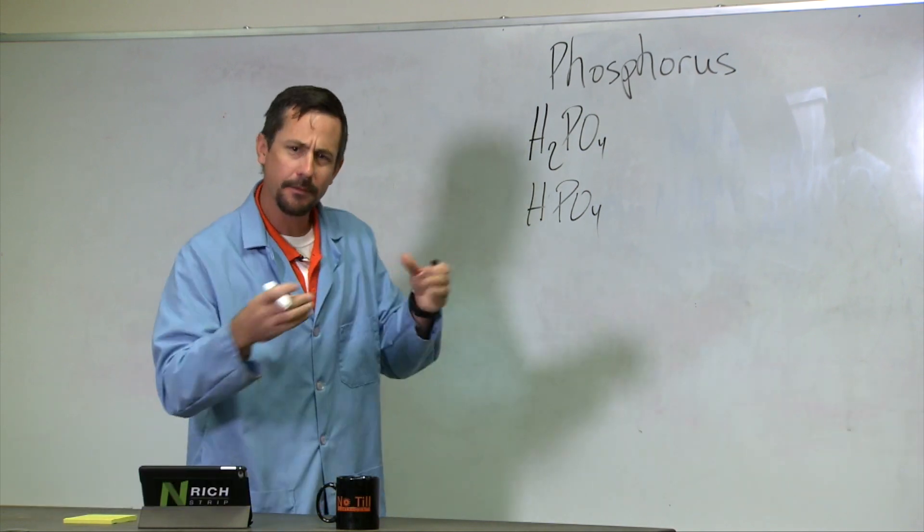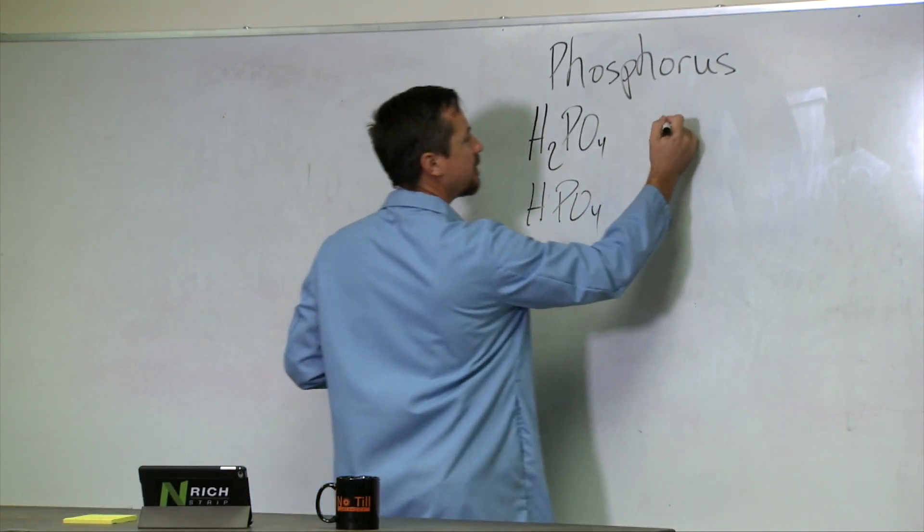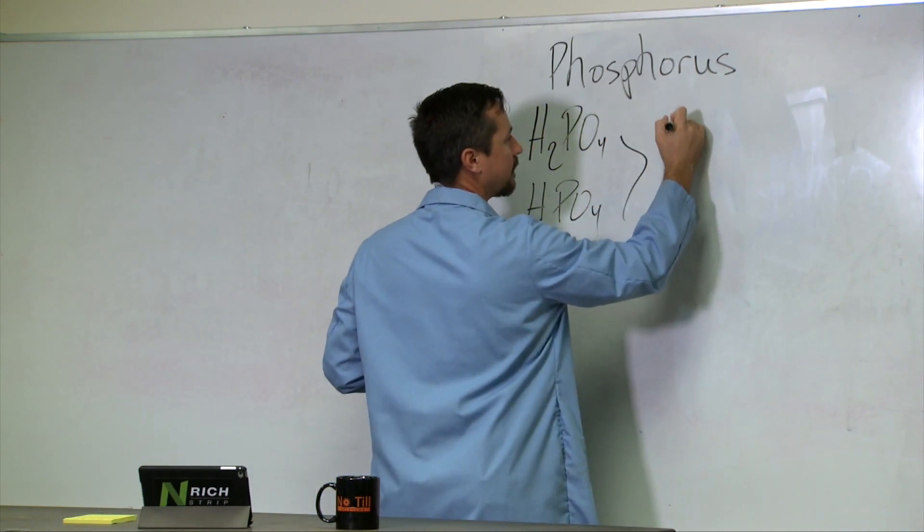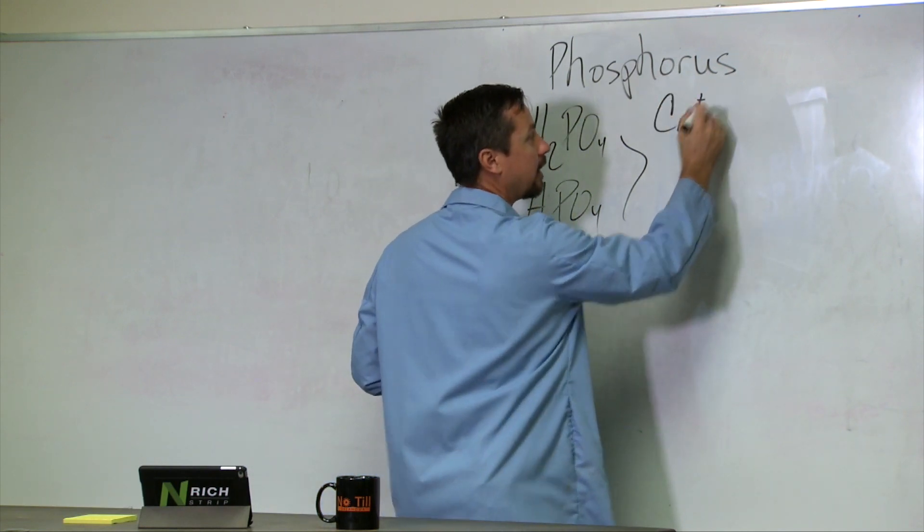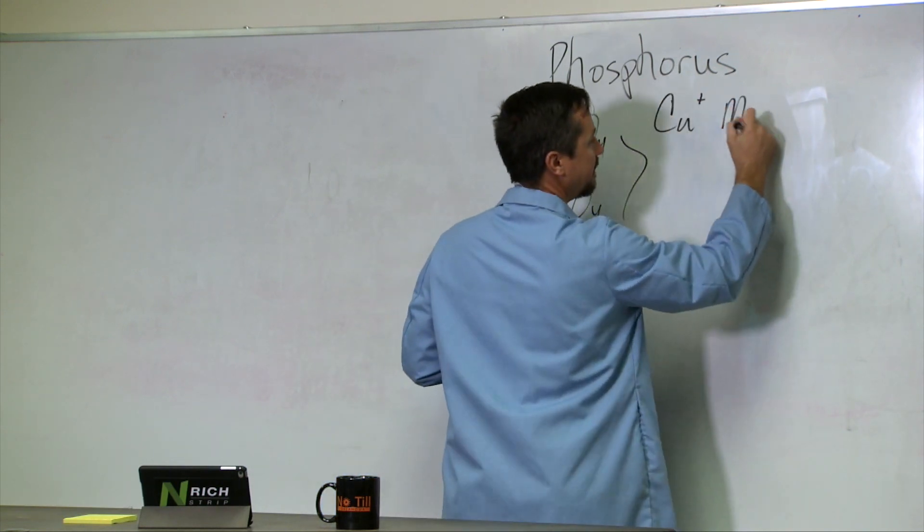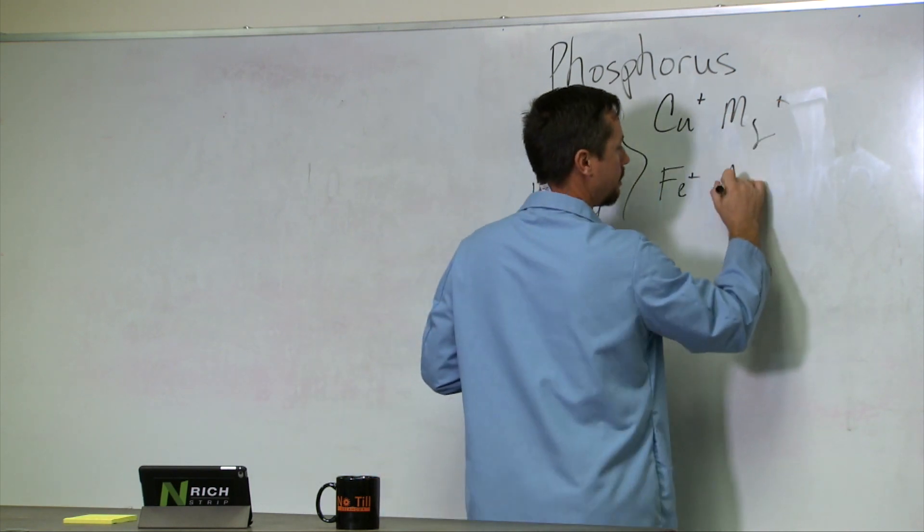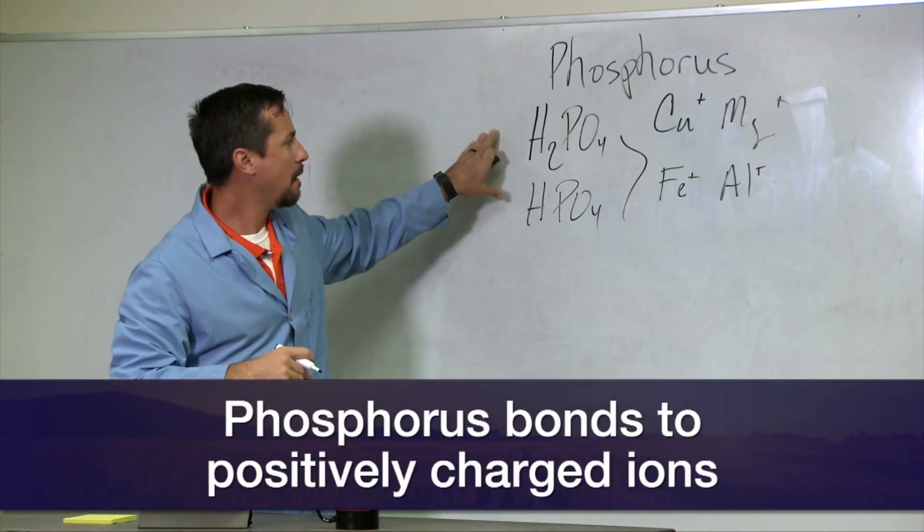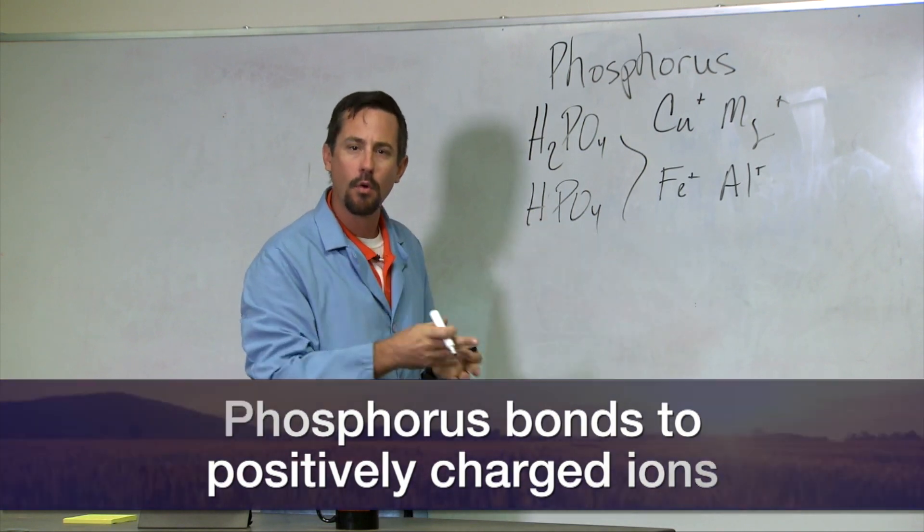We always talk about phosphorus being immobile. It's not because it's binding to the soil and can't move—it's because if there's any cation in the system (a cation is a positively charged ion), like calcium, magnesium, iron, or aluminum, phosphorus will bind with those, creating compounds that become more and more insoluble.